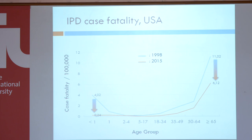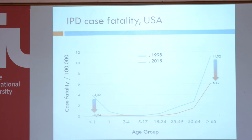What about mortality? Do we prevent deaths from invasive pneumococcal disease? In the United States, you see a very large drop in mortality in children, but also in the oldest population. As I showed in the beginning, the highest mortality is there in older persons. So also there, by herd protection, the mortality of invasive pneumococcal disease dropped and is half of what it was in 1998. Those effects are quite large — more deaths are prevented by vaccinating children than by vaccinating the target population itself.